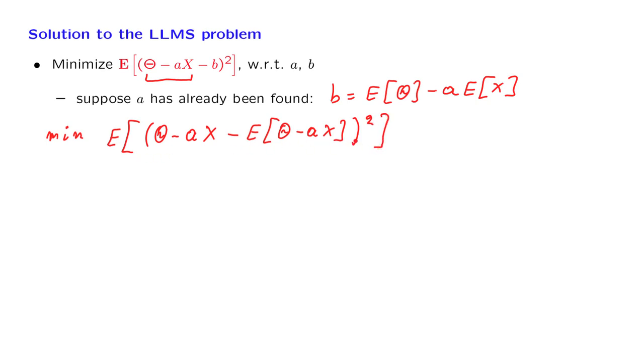And this is the quantity we want to minimize. What is it? We have a random variable minus the expected value of that random variable squared, and then we take expected value. This is just the variance of the random variable theta minus ax.